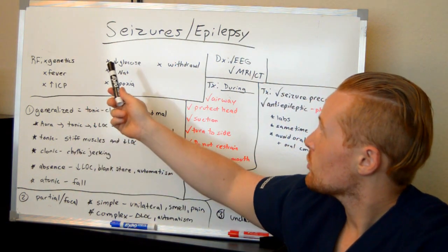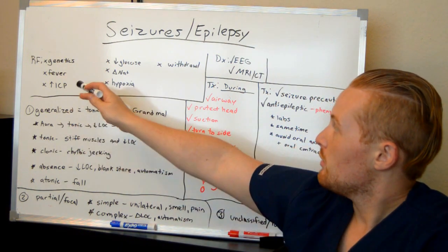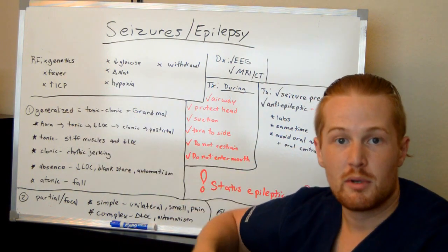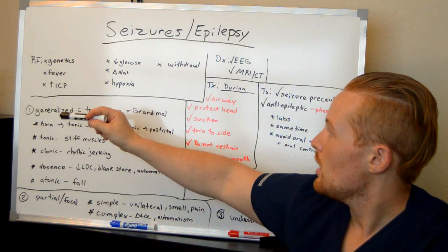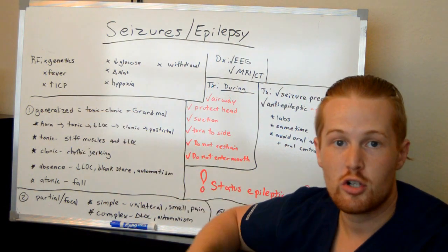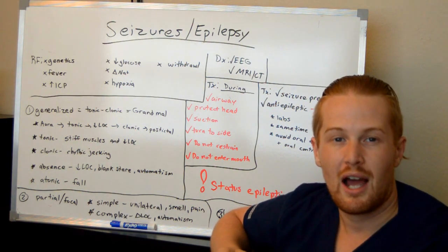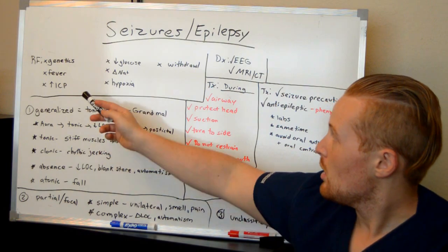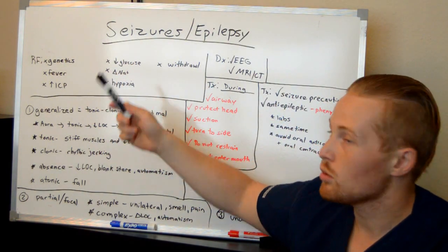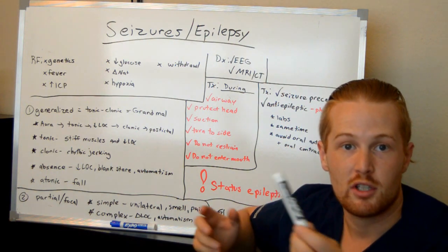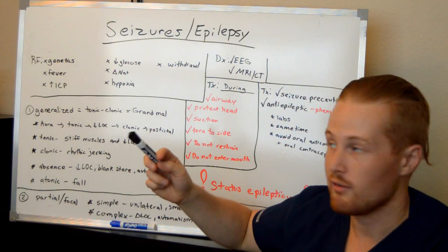What are some risk factors for seizures? Genetics is a risk factor. Fevers, especially in very young children, can cause seizures. Increased intracranial pressure, such as after a head injury, brain tumors, hydrocephalus, meningitis — basically problems with pressures in the head. Low glucose levels, so hypoglycemia — if a patient gets too much insulin, before they go unconscious, they may start having seizures.